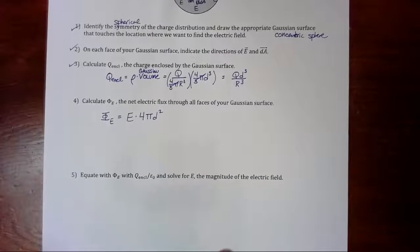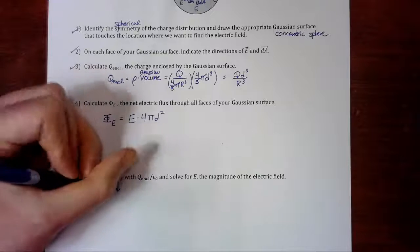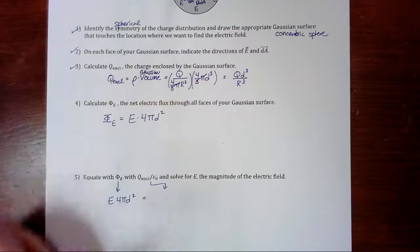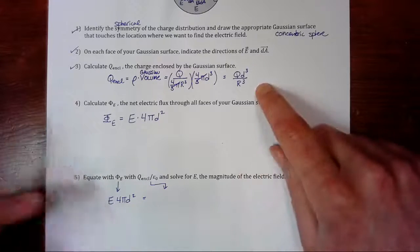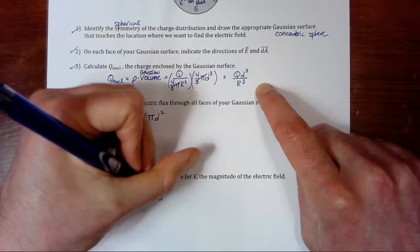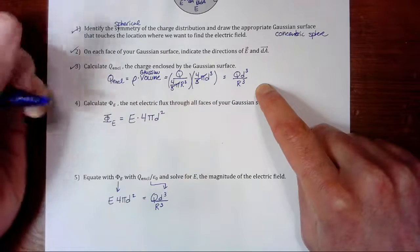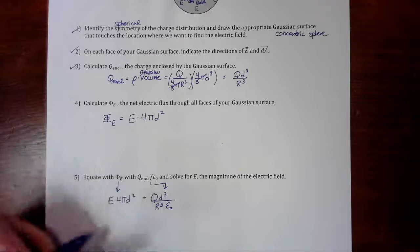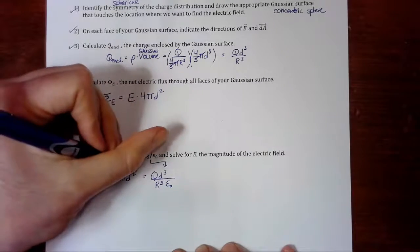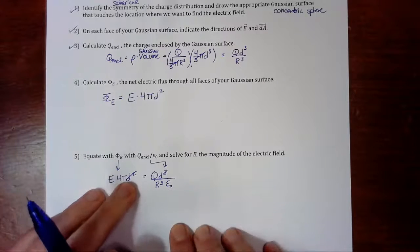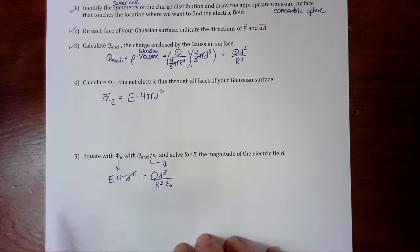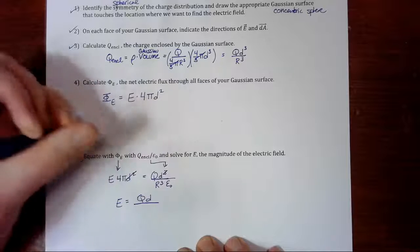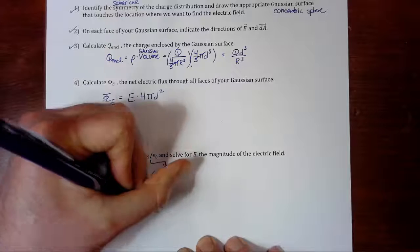And then the last step is to take our flux, E times 4π d², and set that equal to Q enclosed over ε₀. And Q enclosed we figured out before, so that is big Q times d³ over R³, and then we just have to divide that by ε₀. Rearrange and solve for E. So two of our d's cancel, so the d² cancels on the left side and we're just left with d on the right side. And then I can divide both sides by 4π. So that leaves us with Q d over 4π R³ ε₀.